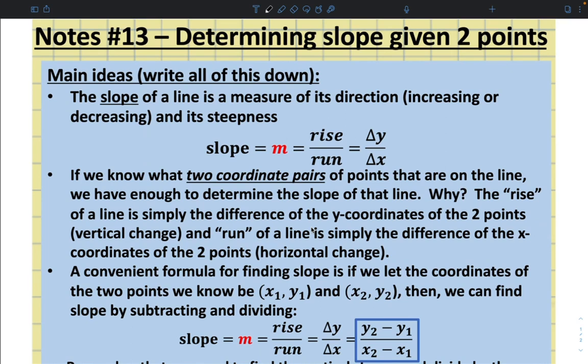If we know what two coordinate pairs of points that are on the line, we have enough to determine the slope of that line. Why? The rise of a line is simply the difference of the y-coordinates of the two points, vertical change, and run of a line is simply the difference of the x-coordinates of the two points, horizontal change.